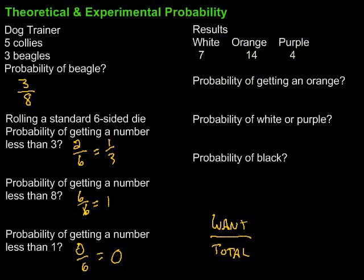The probability of getting an orange would be what I want to happen over the total number of trials. So 14 over the total number of trials. 7 plus 14 is 21, plus 4 is 25. So 14 out of 25 would be the probability of getting an orange.